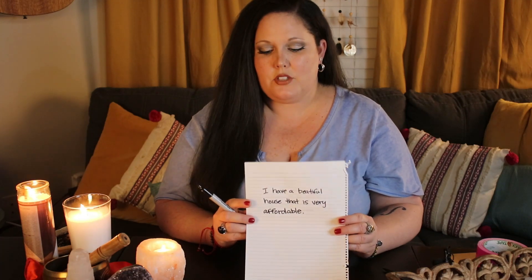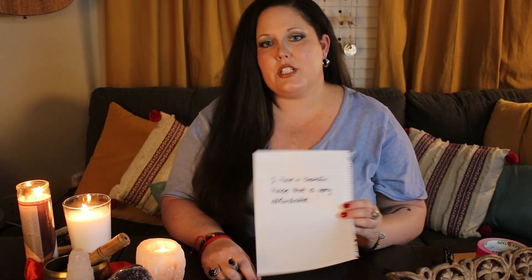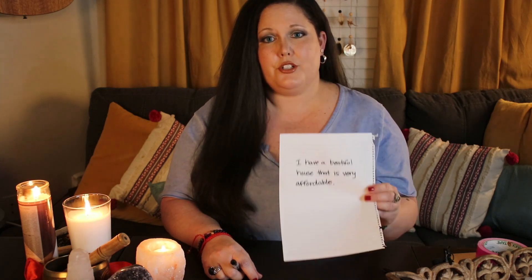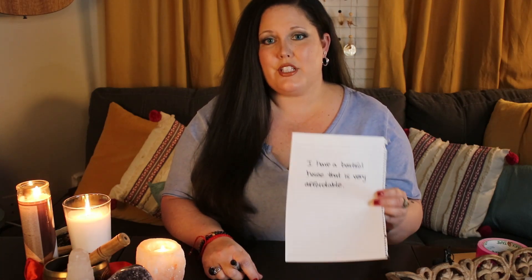Avoid any negatives in your sentence like 'I do not' or 'I will not.' Only use positives in your sentence like 'I am' or 'I have.' So here I have created my positive sentence — it says 'I have a beautiful house that is very affordable.' You need to write your sentence out on a piece of paper. It does not matter what kind of paper you use because this is not actually going to be part of your sigil. This is just the paper that you use to write out your sentence and to figure out which letters you're going to use to make your actual sigil.